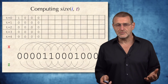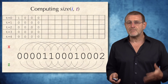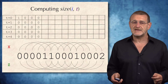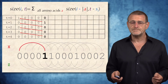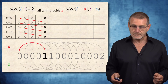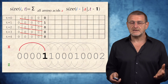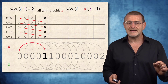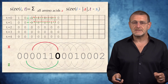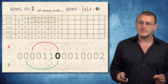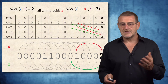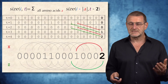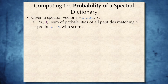Therefore, to compute the size of the spectral dictionary, we simply need to construct a table for computing size(i, t). This is an example of how we compute values of size in a given column. The recurrence corresponds to a value s_i equal to 1. We continue filling in the table; in another case the recurrence corresponds to the value in the spectral vector equal to 0. Finally, we fill in all the table, and the final value in the last element of the spectral vector is 2. We have just computed the size of the spectral dictionary.